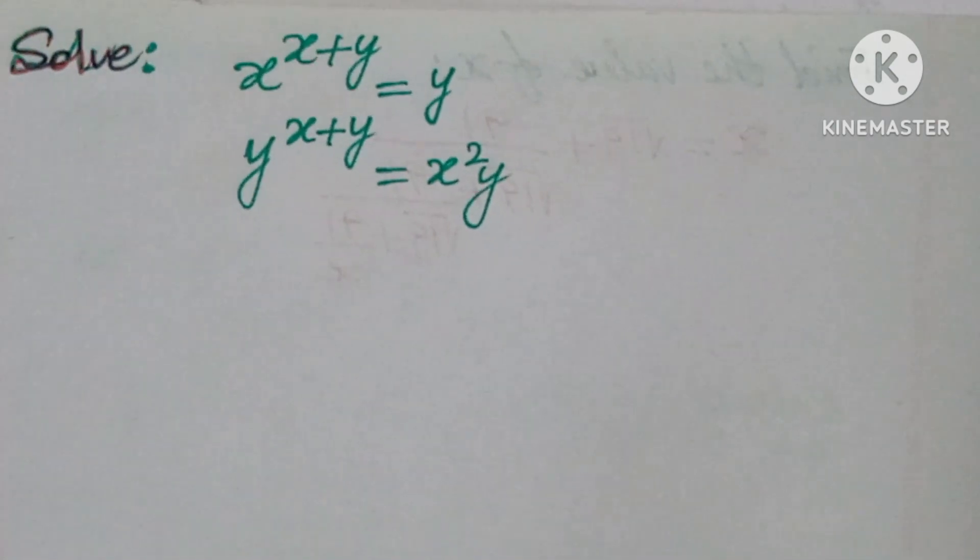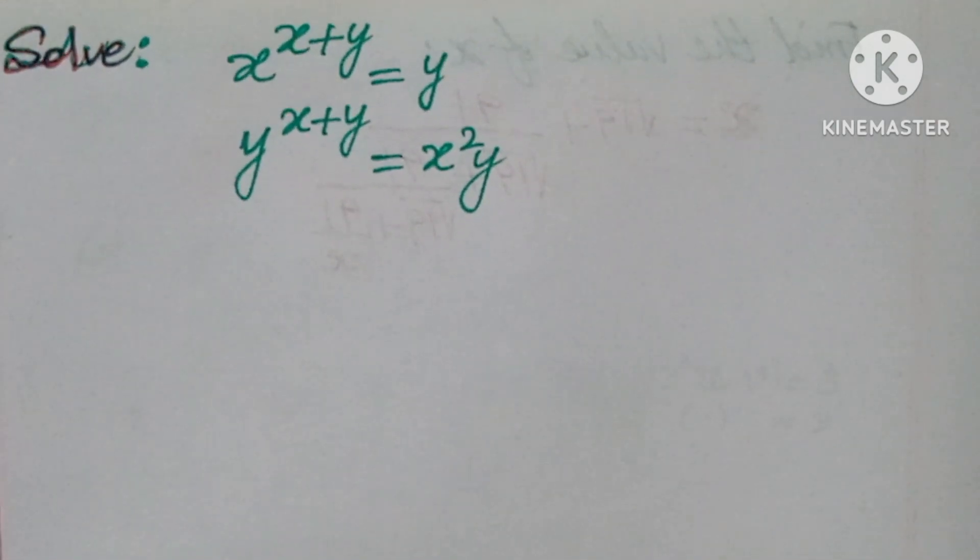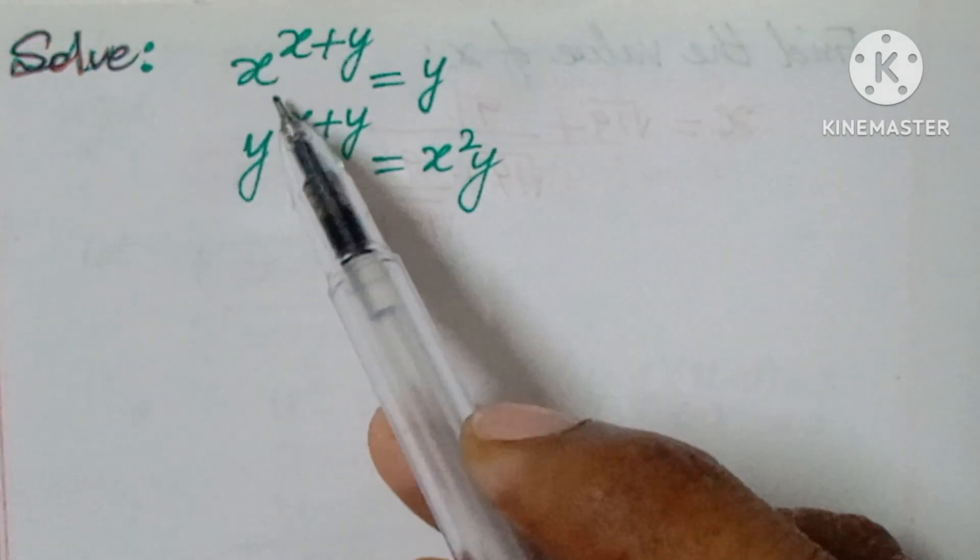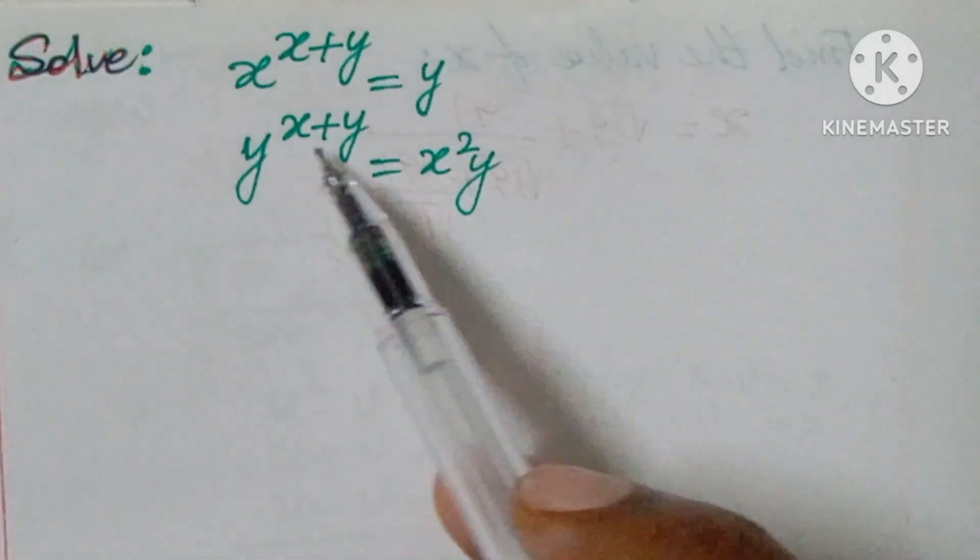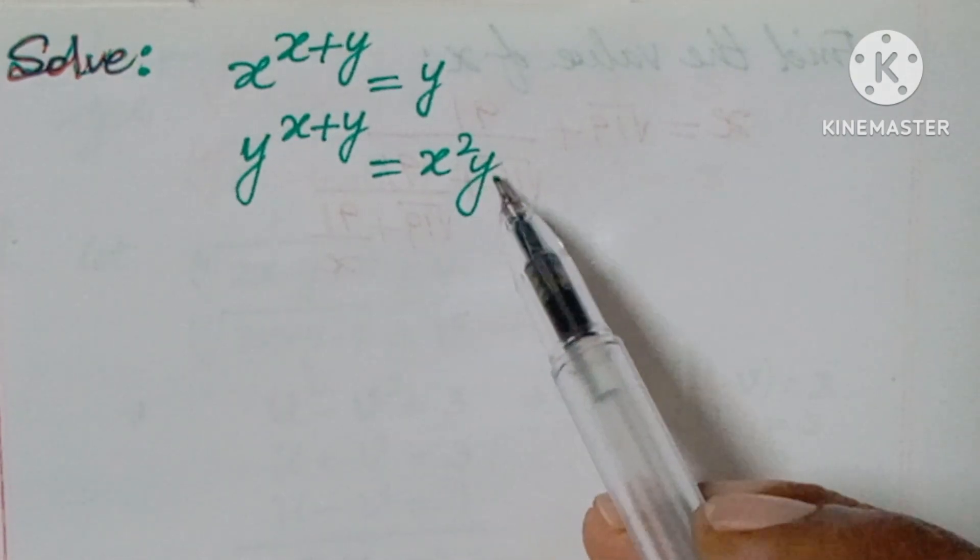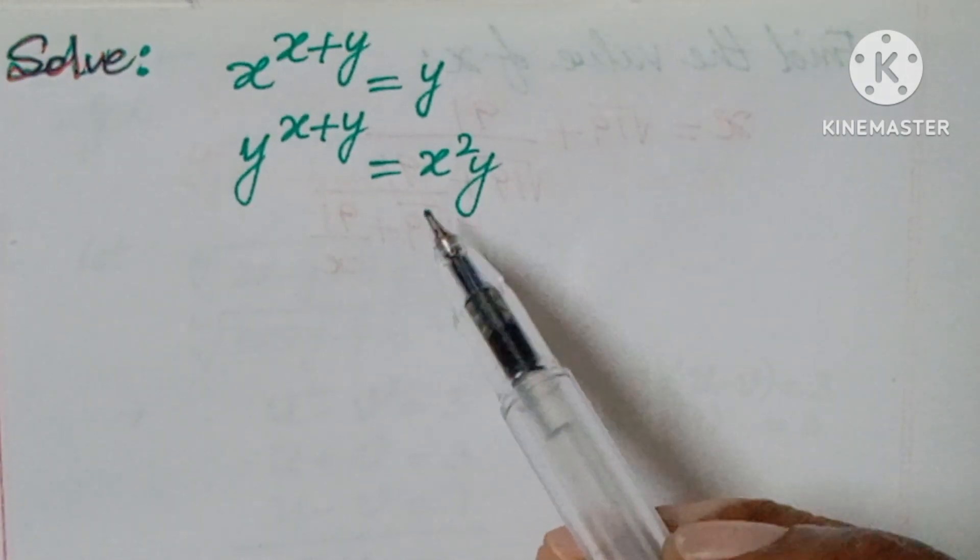Hello, welcome back to NCG Max. Today I'm looking at one logical problem: solve x to the power of x plus y equals y, and y to the power of x plus y equals x squared y.